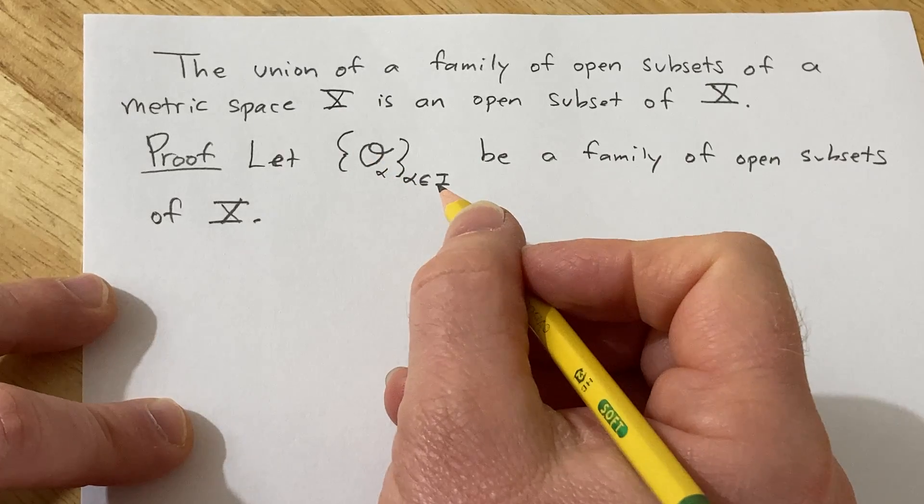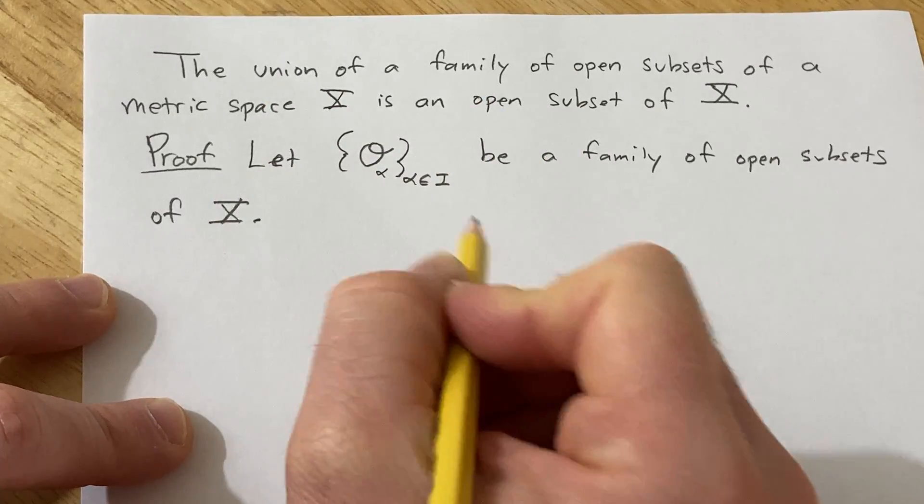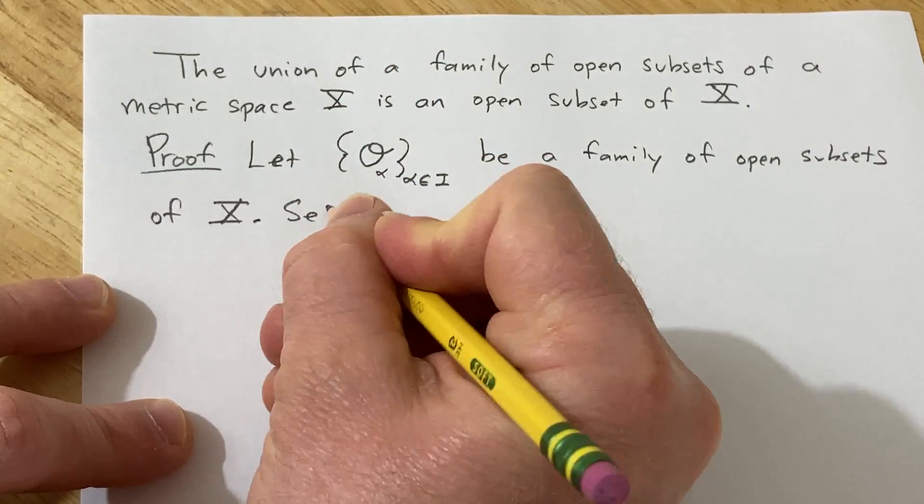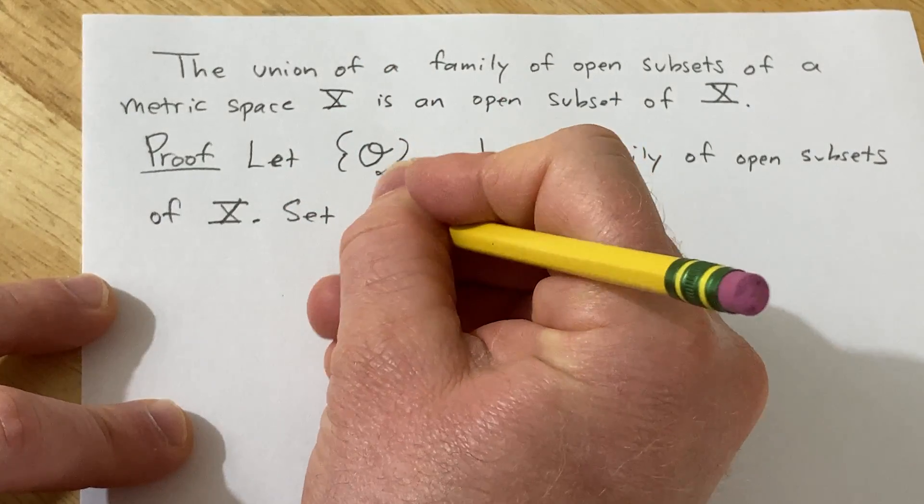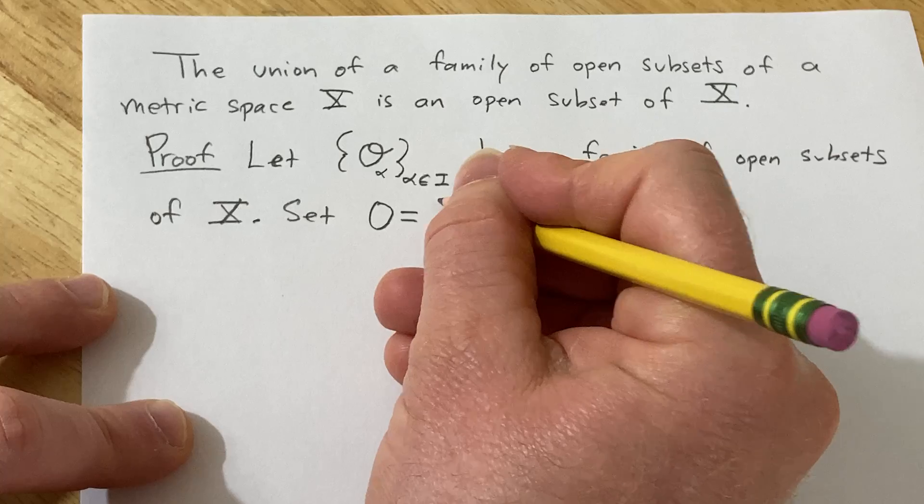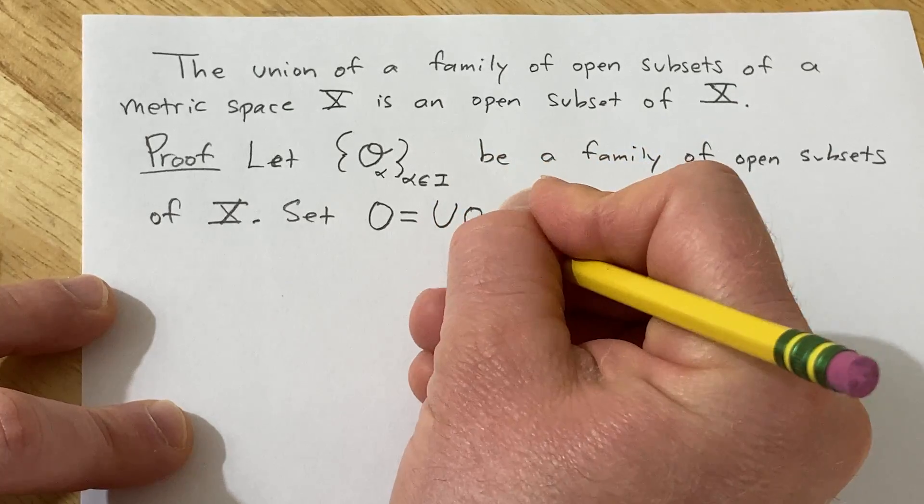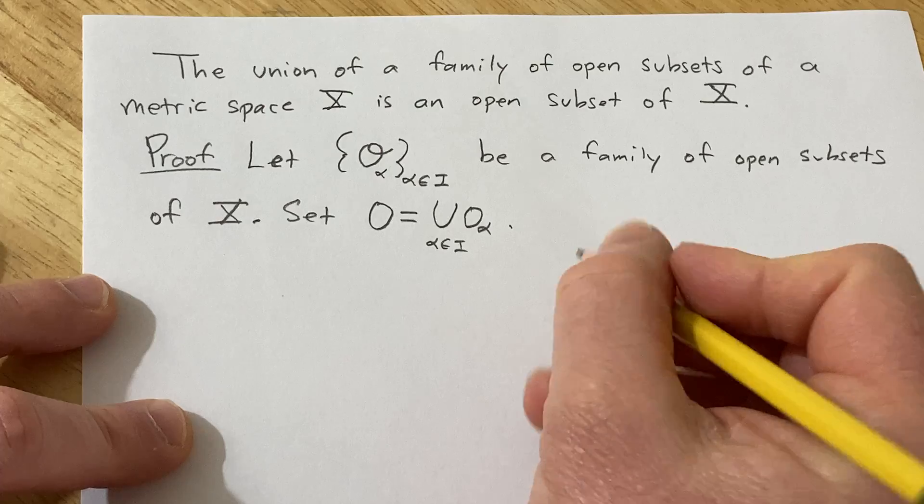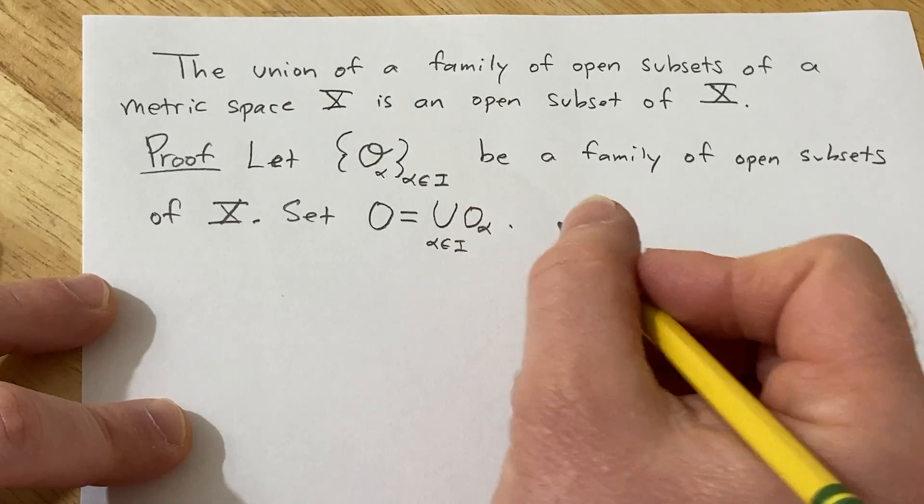And we have to show that the union is open in X. So set, I guess I'll use capital O, equal to the union of the O sub alphas as alpha runs through some index set. So we have to show that this is an open subset of X.